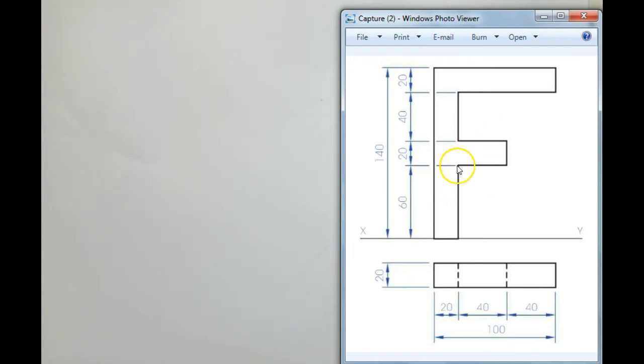What we have here is an orthographic projection view of an F. My heights are in my elevation and my widths are in my plan. This 20, 40, and 40 would be the same as this 20, 40, and 40 here. My thickness is 20.